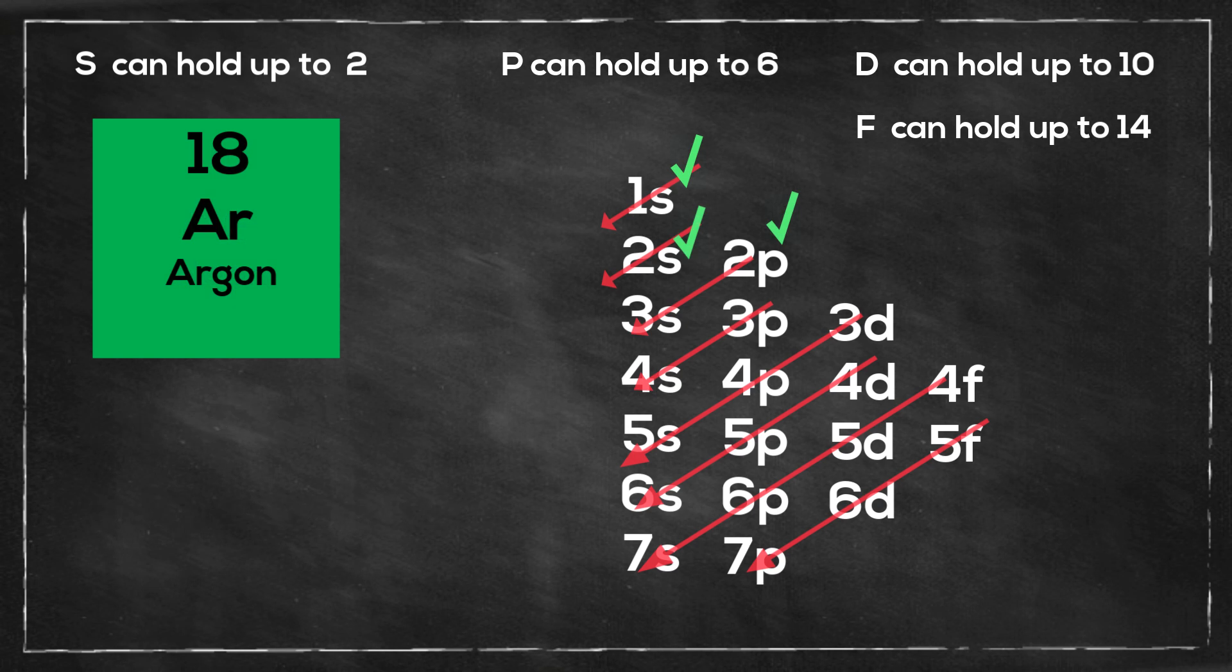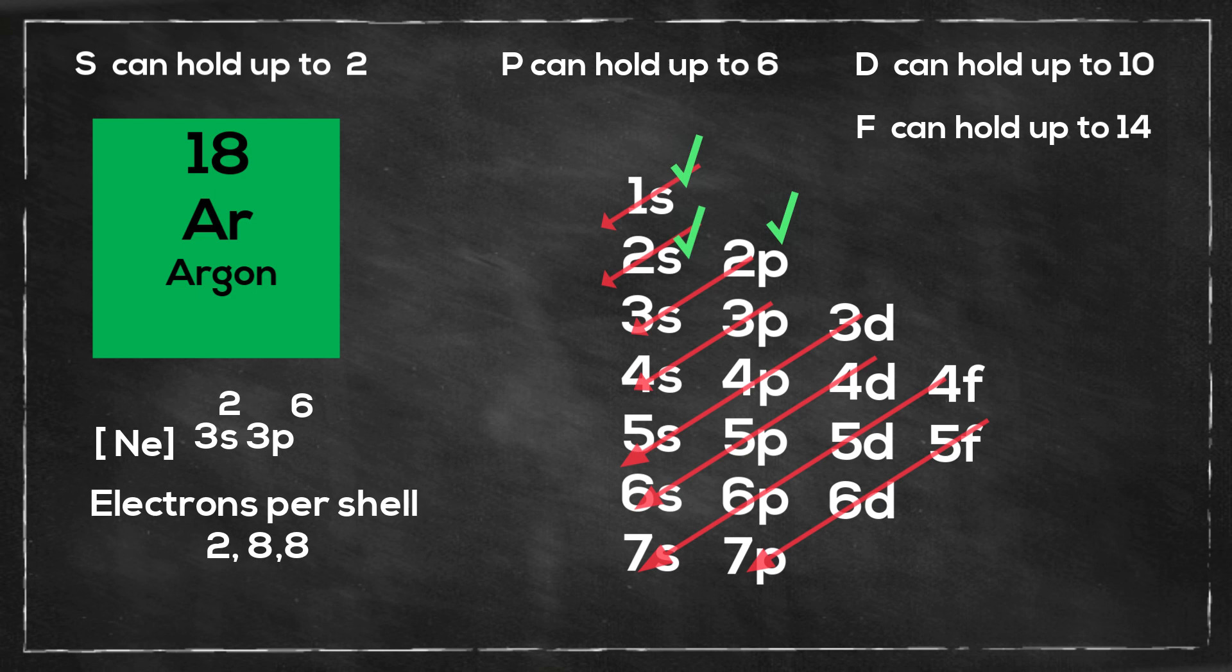Next we have argon and argon is neon plus 3s2 3p6 and the electrons per shell is 2 8 8.